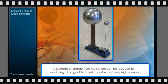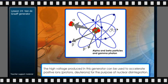The leakage of charge from the sphere can be reduced by enclosing it in a gas-filled steel chamber at very high pressure. The high voltage produced in this generator can be used to accelerate positive ions, protons, and deuterons for the purpose of nuclear disintegration.